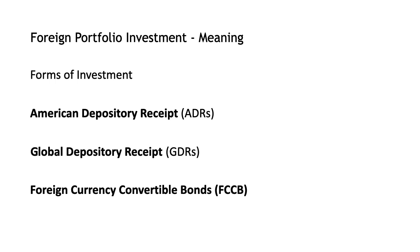Global Depository Receipts (GDRs) represent a bank certificate issued in more than one country for shares in a foreign company. The shares are held by a foreign branch of an international bank and trade as domestic shares but are offered for sale globally through various bank branches. This term designates any foreign firm that trades on an exchange outside its home country.